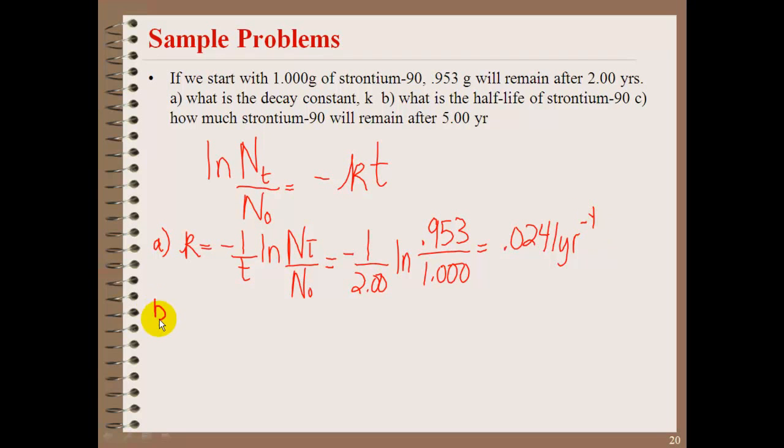Once we know K, we can solve B by using our half-life equals 0.693 over K. And that ends up 0.693 divided by 0.0241 per year, which ends up being 28.8 years is our half-life.